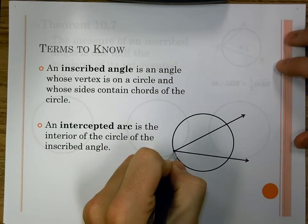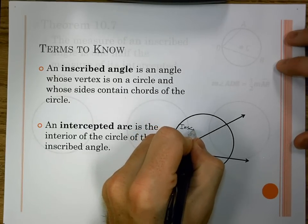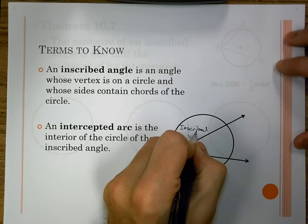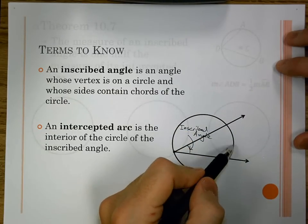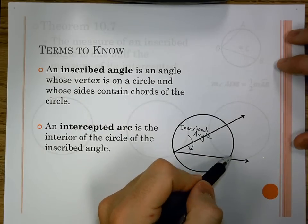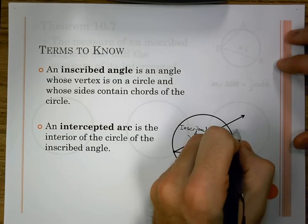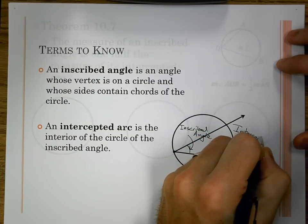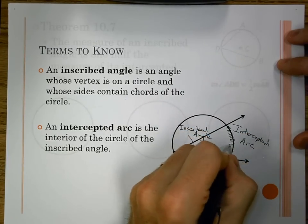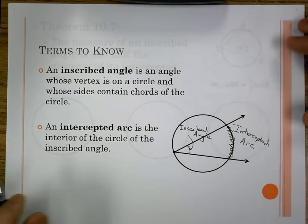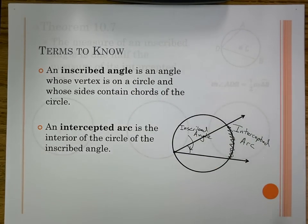So we have a vertex at some point on the circle — let's call it our inscribed angle. The sides go out and they contain part of the circle. That part of the circle, that arc, is what we call the intercepted arc. So we have an angle that matches up with some arc, and we call that the intercepted arc.